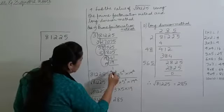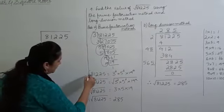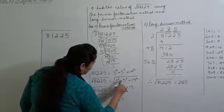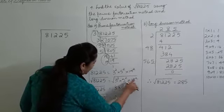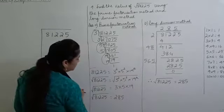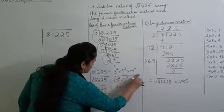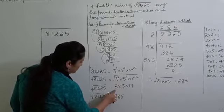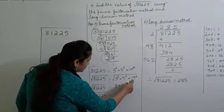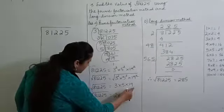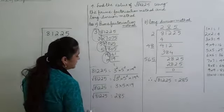Now take the square root on both sides. So the square root of 81,225 equals the square root of 3 squared into 5 squared into 19 squared. To remove the square root symbol: from two 3's bring one 3 out, from two 5's bring one 5 out, from two 19's bring one 19 out. The product is 3 × 5 × 19 = 285. So the square root of 81,225 is 285.